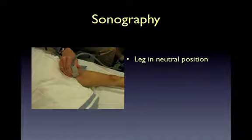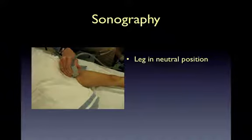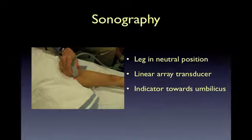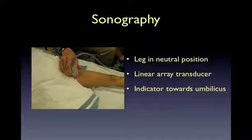Now on to sonography. We will position the patient with the lower extremity in the neutral position and in most cases we'll be using a high-frequency linear array transducer. In some large-sized adults, we may want to try a low-frequency phased array probe. The transducer will be oriented in plane with the femoral neck such that the probe indicator or bump points towards the umbilicus.